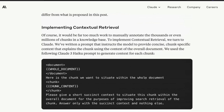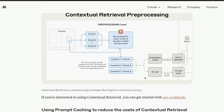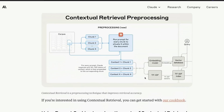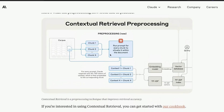What Anthropic is suggesting is: don't just do those things — do something different along with that, which they call contextual retrieval preprocessing.